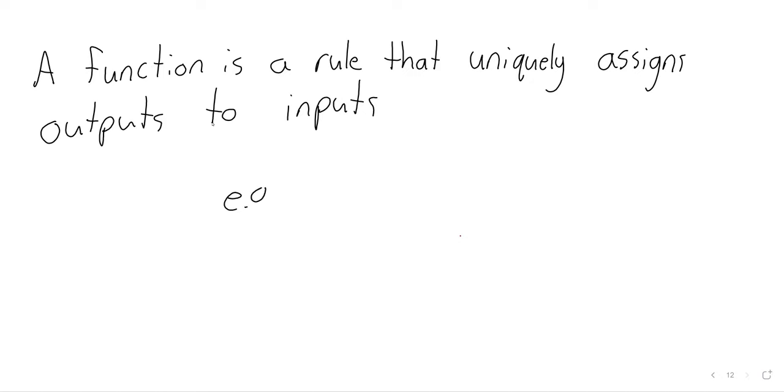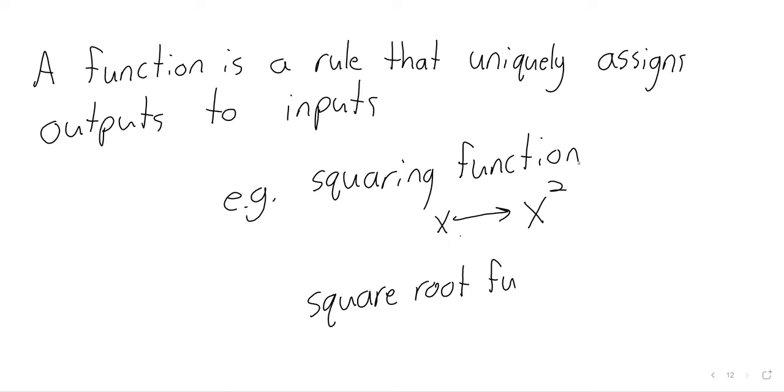So for example, you can have the squaring function that takes a number as its input and squares it, or you could have a square root function that takes a number as its input and gives you the square root. Although you'll notice that if we're working purely with real numbers, the square root function will sometimes break. And if you give it a negative number as its input, it won't be able to do anything with it.